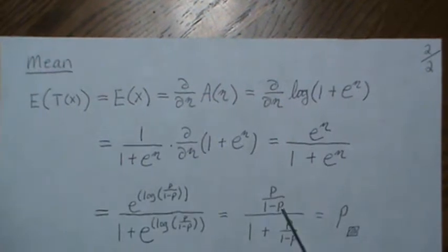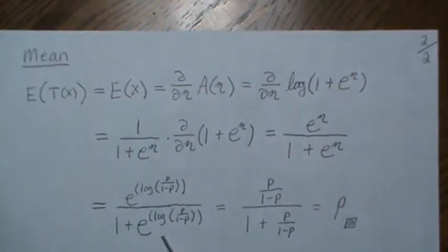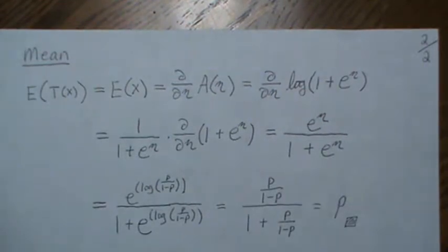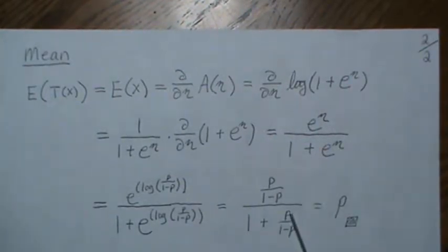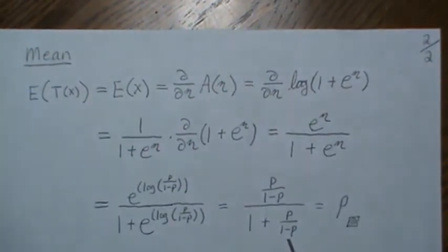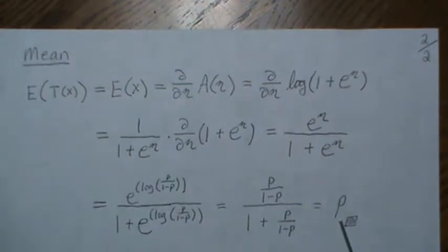And the e and the log cancel, just leaving p over 1 minus p. And here we're left with this. Now to combine this, if we take the 1 minus p divided by 1 minus p, we have like denominators and the p's cancel, leaving 1 over 1 minus p. Invert and multiply, we come up with p. And we know that the mean of a Bernoulli is p, so the probability of observing a 1.